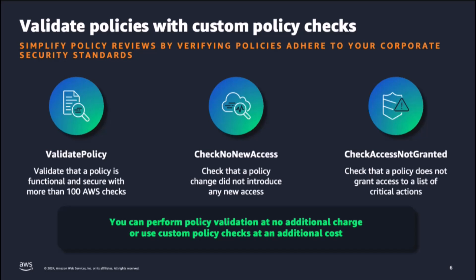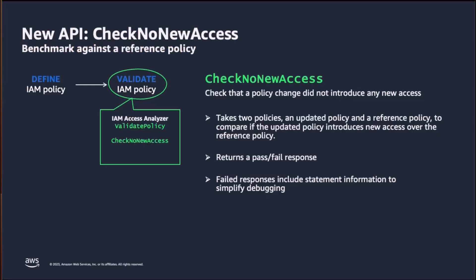You can run custom policy checks on identity and resource-based policies. The Check No New Access API checks if new access is allowed for an updated policy when compared to a reference policy, and returns a pass or fail response. When policies pass the checks, you can make policy updates with confidence. If policies fail, IAM Access Analyzer provides additional information so that developers can debug and fix the access policy. You can run this check using the AWS CLI, IAM Access Analyzer API, or the JSON Policy Editor in the IAM console.